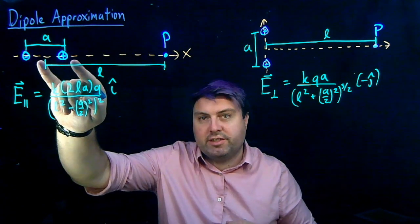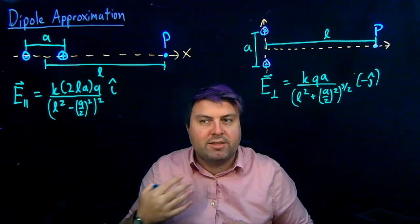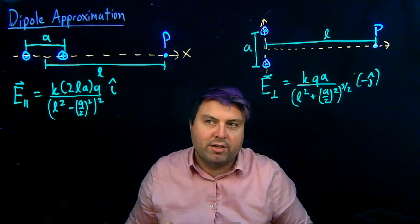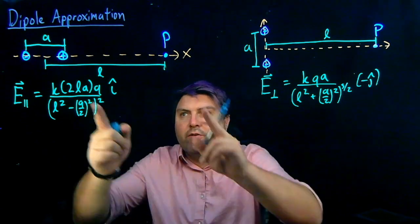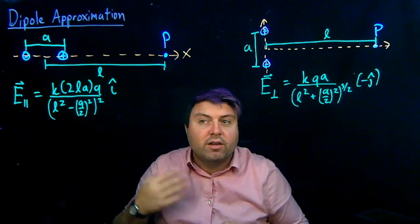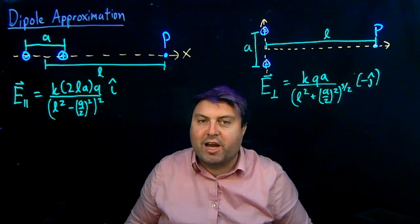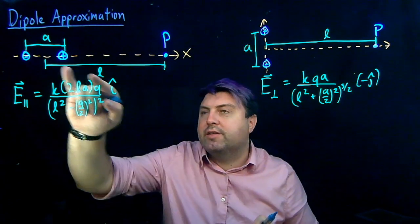With dipoles, this distance A will oftentimes be 10 to the negative 9, 10 to the negative 10 meters, something on that order, whereas this distance L can be tens, hundreds, thousands of times more than the distance A.